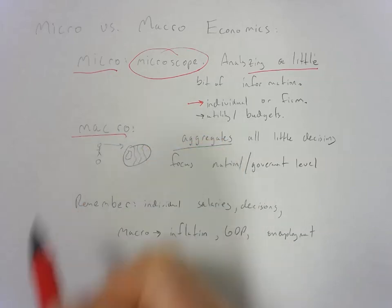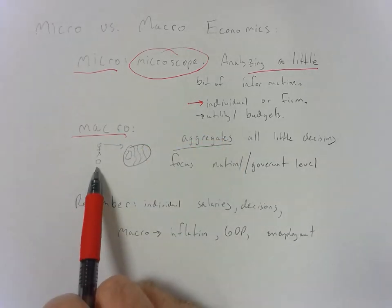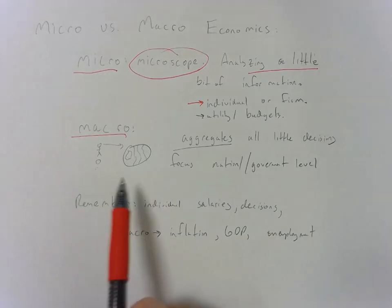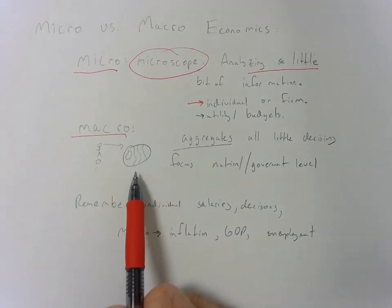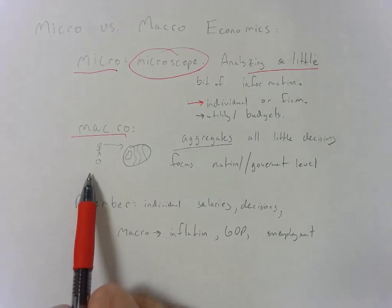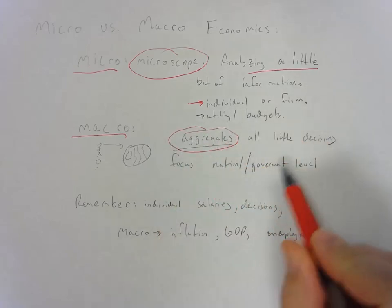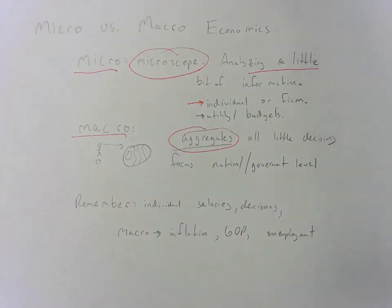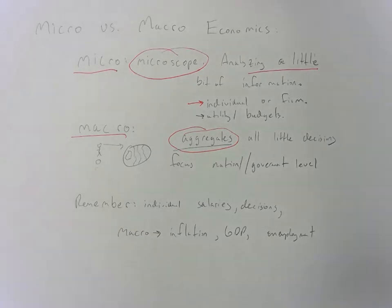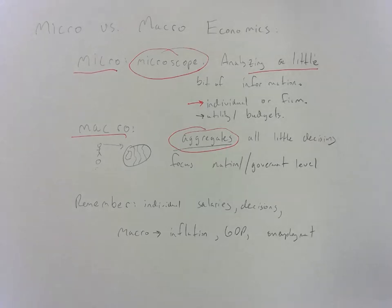Now, for the macro view, what I would like you to imagine is that you're standing on the moon looking at earth. There's no way you're going to be able to see individuals or firms when you're that far away. So when you take that big picture point of view, what you're doing is aggregating all of the little decisions to focus on the national or the government level. From a macro point of view, we're interested in things like trade between countries, inflation or aggregate price levels, GDP or what the dollar value is of everything that's being produced.